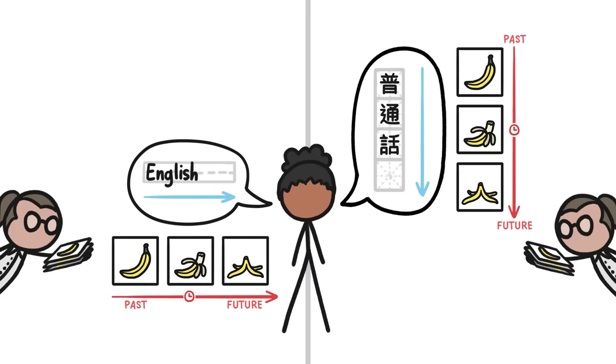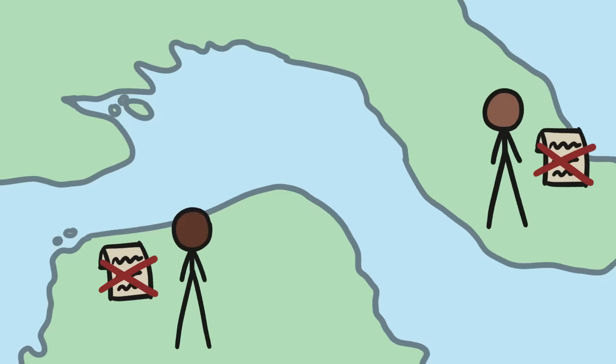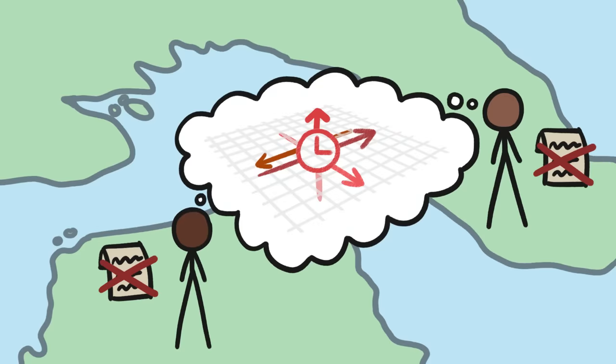But it's not just about writing direction. Lots of cultures have no history of written language, yet still represent time spatially.